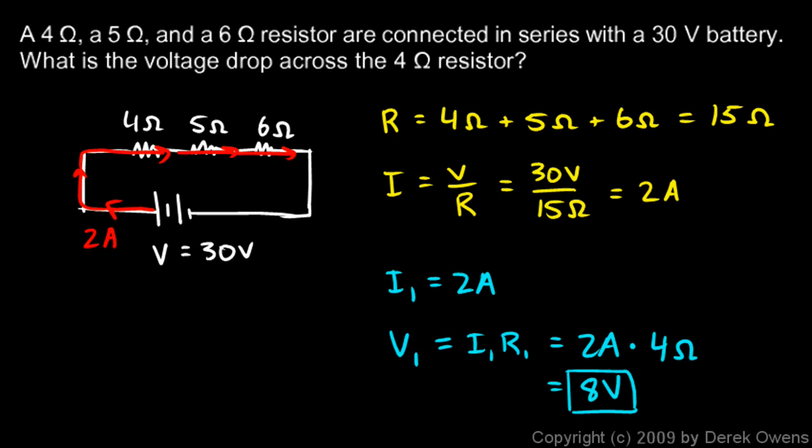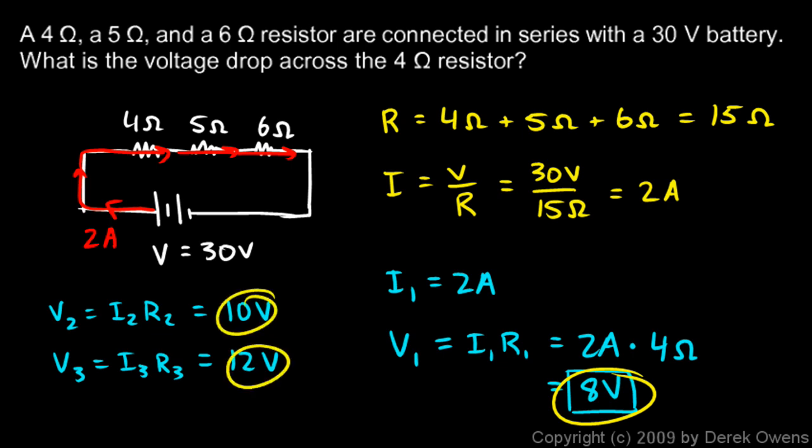Now we're not asked to find the other ones, but I'm going to go ahead and do it just to make a point here. V2 would be I2 R2, and V3 would be I3 R3. I'm going to go ahead and calculate these. I is 2 amps in each case, so 2 amps times the 5 there gives us 10 volts, and 2 amps times the 6 ohms here gives us 12 volts. Just take note that the 8 volts and the 10 volts and the 12 volts add up to 30. That's one of the other things we said about resistors in series, is that the voltages add up to the total. And sure enough, in this case we see that they do.